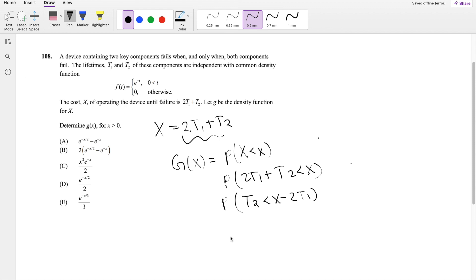So then this is equal to integrating t2 from 0 to x minus 2t1. But let's first figure out what the joint function of t1, t2 is. We know these are independent, so if f of t1 is equal to e to the negative t1 and f of t2 is equal to e to the negative t2, this is just equal to f of t1 times f of t2 by the independence. So this is equal to e to the negative t1 times e to the negative t2.